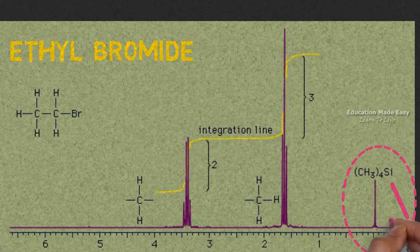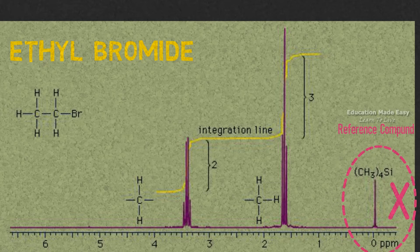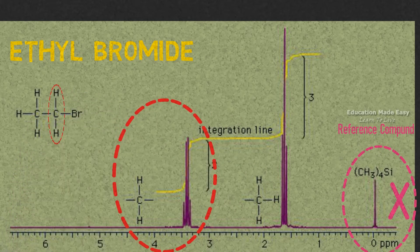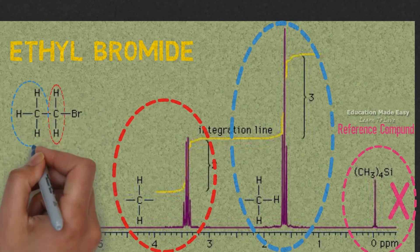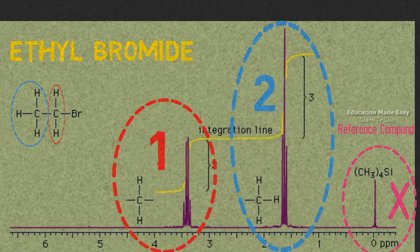The first signal is due to the proton CH2 and the second signal is due to the proton CH3. Let us mark these signals as signal 1 and signal 2.